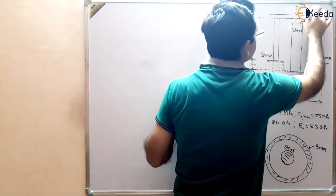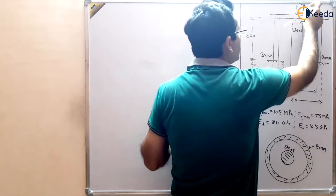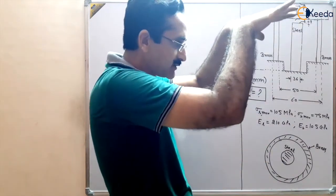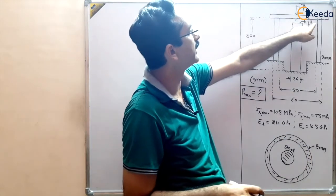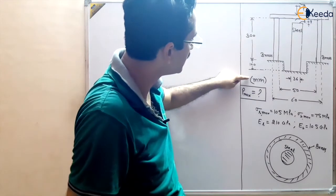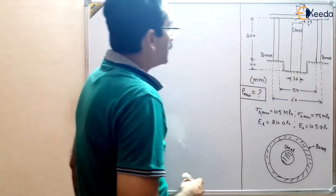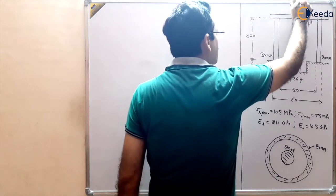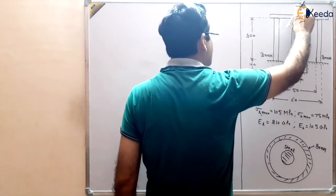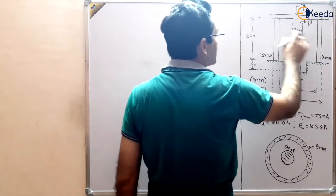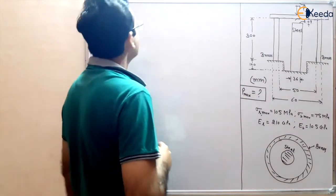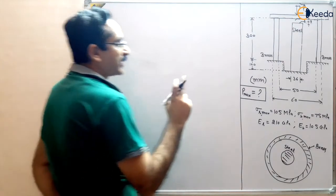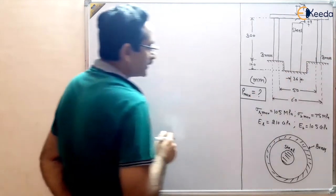Initially, a load P_i is applied until the 0.08 mm gap is filled — that is, until there is a contraction of 0.08 mm in the brass. All dimensions are in mm. After filling this gap, any further load applied will be shared by steel and brass depending on their properties.